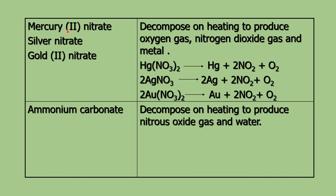The next three nitrate salts — mercury(II) nitrate, silver nitrate, and gold(II) nitrate — decompose on heating to produce oxygen gas, nitrogen dioxide gas, and the metal itself. These metals are all low on the electrochemical series (ECS), which you studied in Form 3. The key difference from the previous group is that these produce just the metal, not metal oxide.